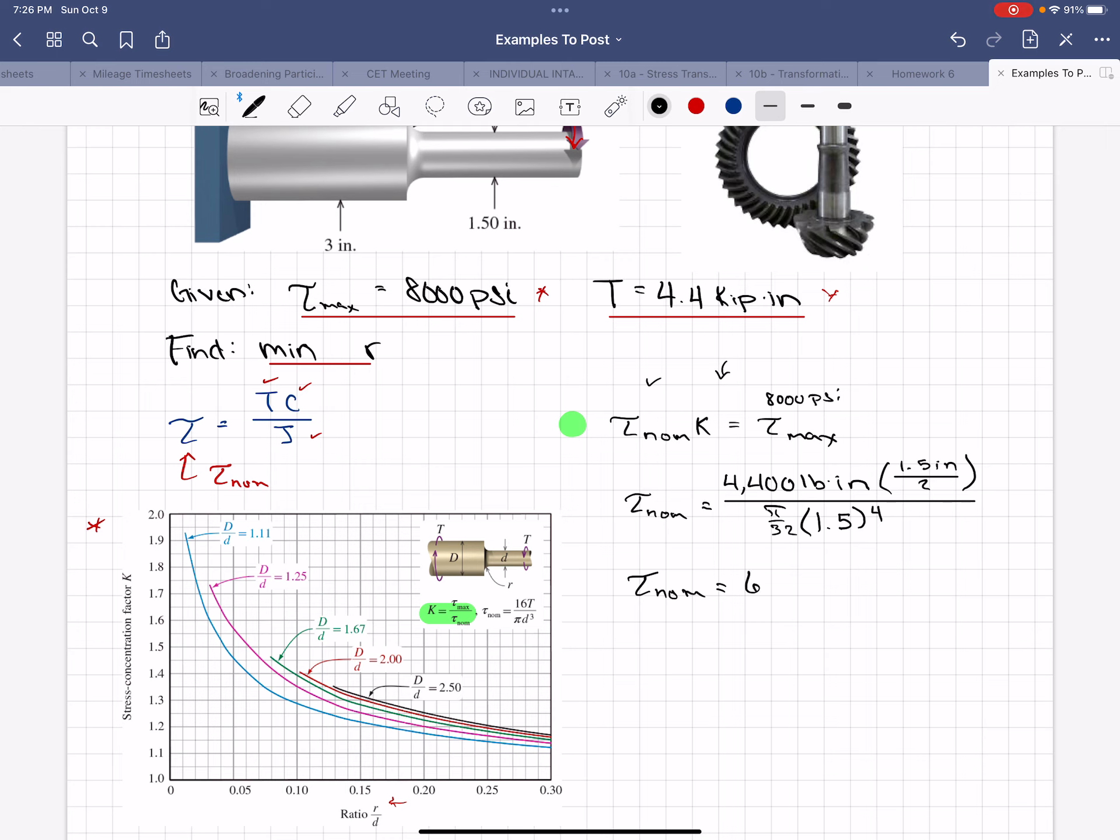And we get a nominal shear stress equal to 6639.7 psi. So now we can solve for k going back to that equation. We can say k equals the maximum shear stress over the nominal shear stress, and that equals 8,000 psi all over the value we just calculated of 6639.7 psi.